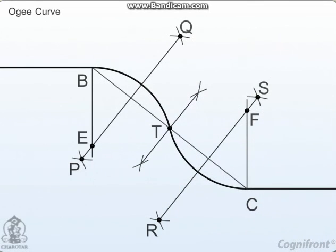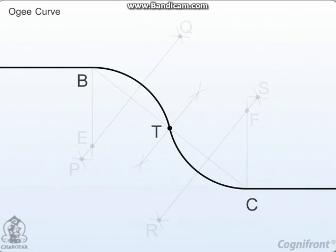The arc BTC is the required ogee curve. We'll see you next time.